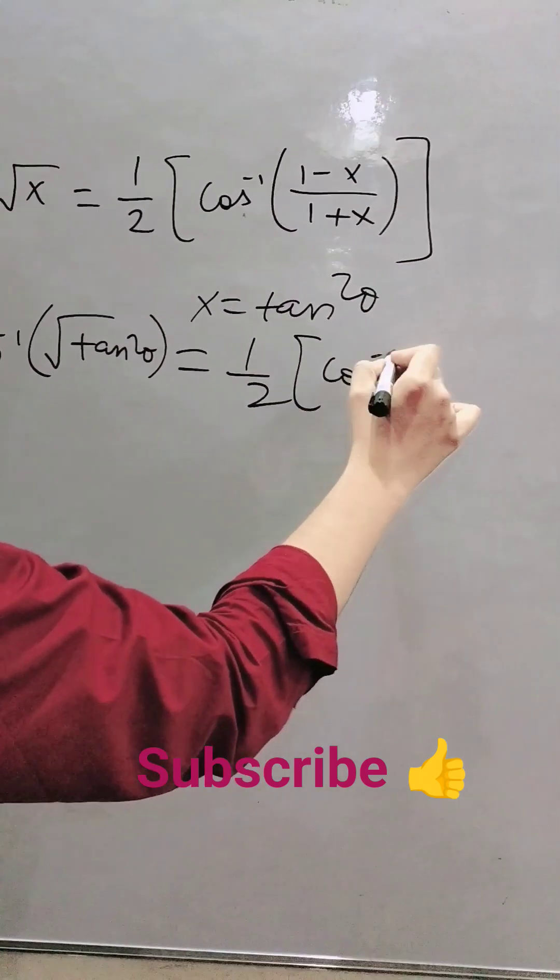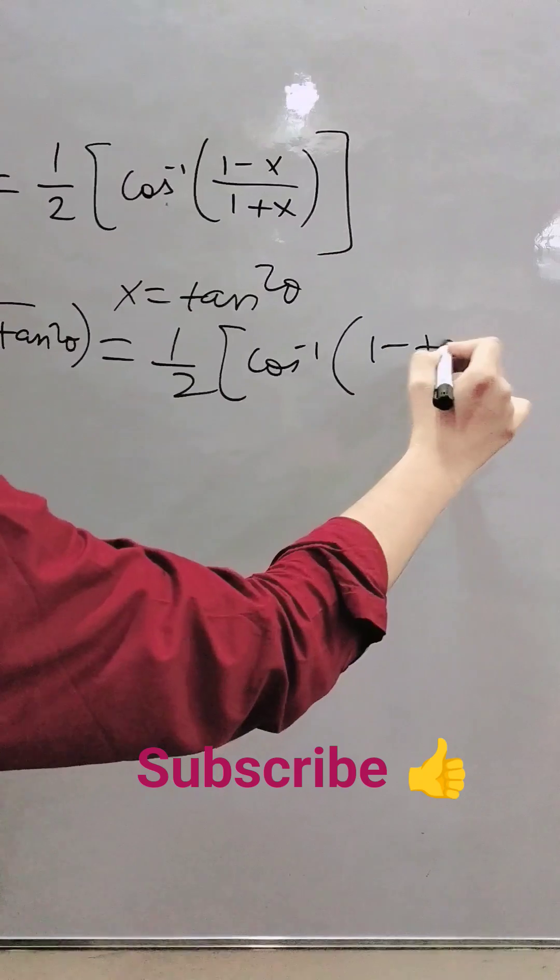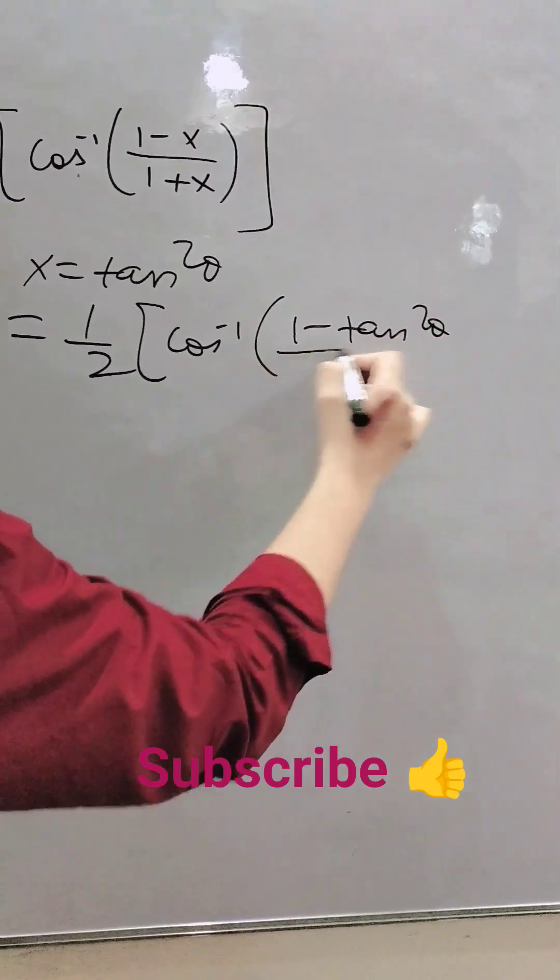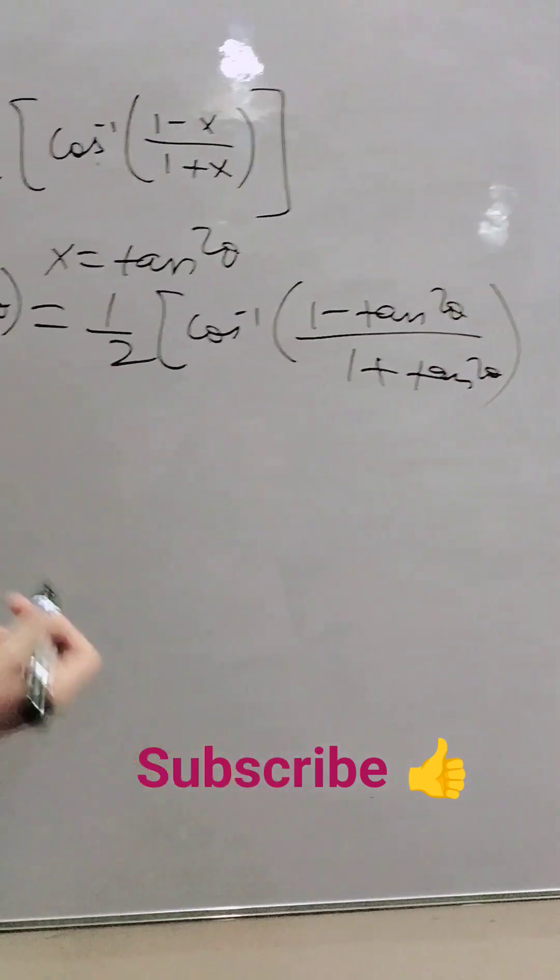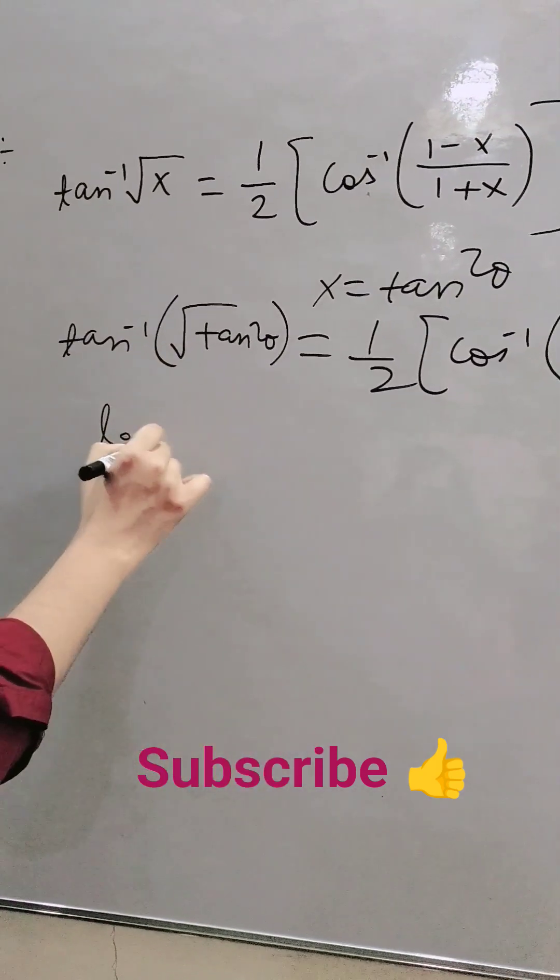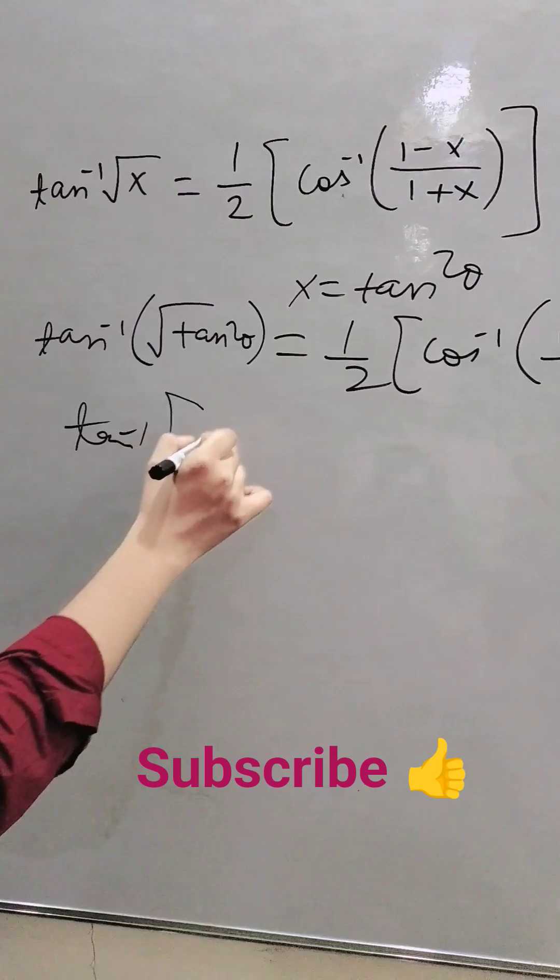(1/2)cos⁻¹((1 - tan²θ)/(1 + tan²θ)). So this becomes tan⁻¹(tanθ) equals